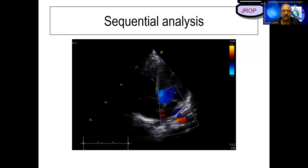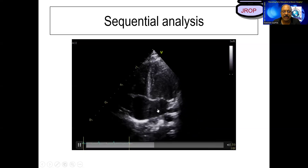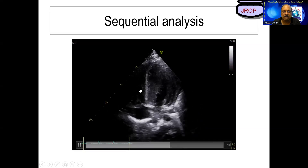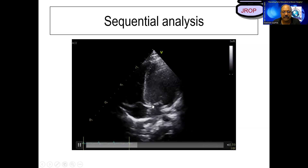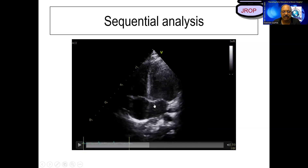Next we identify: this is the right atrium, this is the left atrium. Now we have to identify the left ventricle and right ventricle. But before that, we identify the mitral and tricuspid valves. Look at the connection of these valves — the tricuspid valve insertion is relatively more apically placed compared to the mitral valve insertion. The apically placed tricuspid valve insertion is a known fact that identifies it as the tricuspid valve.